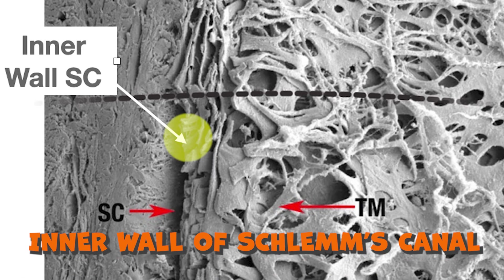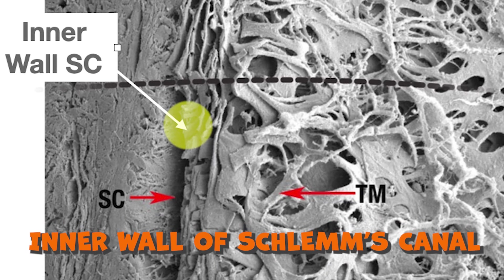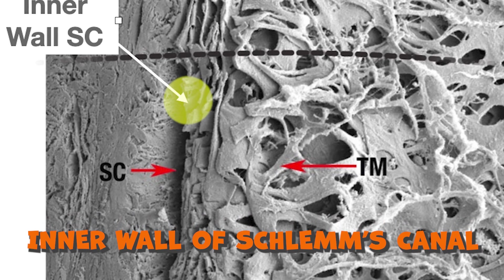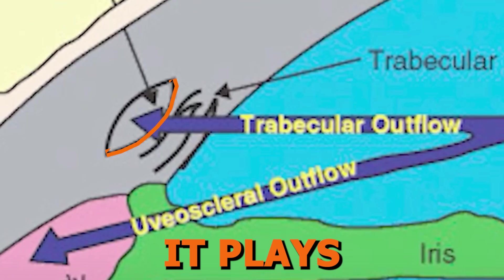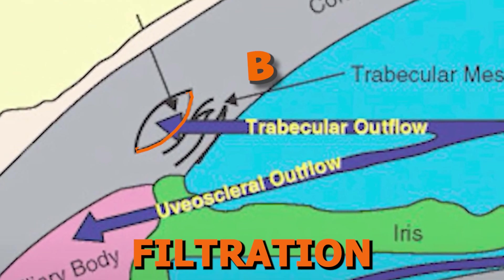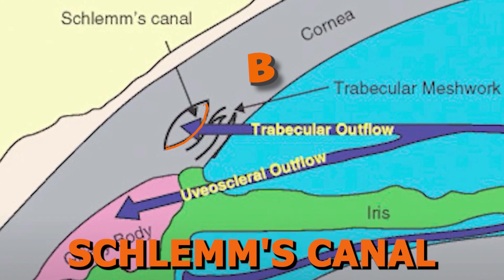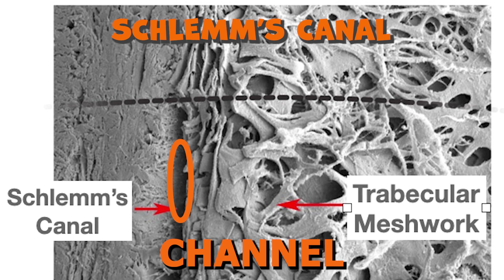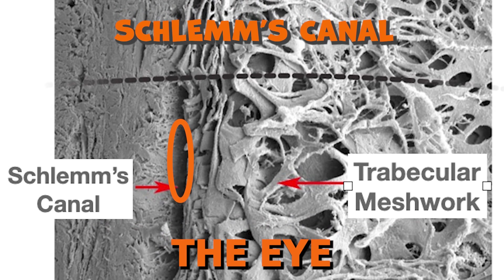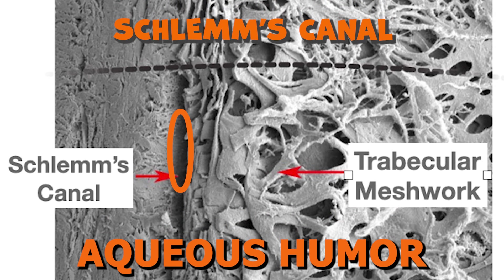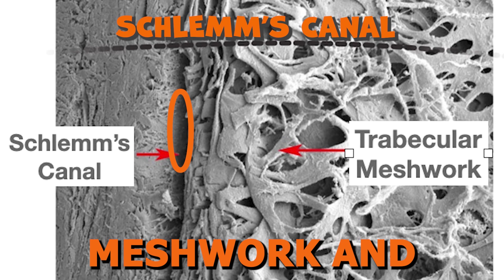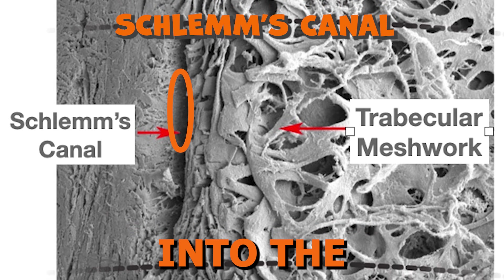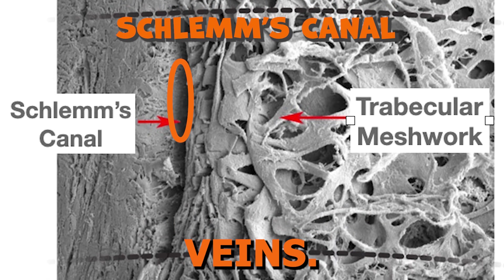Point B is the inner wall of Schlemm's canal, which is lined with endothelial cells and is in direct contact with the trabecular meshwork. It plays a crucial role in the filtration and passage of aqueous humor into Schlemm's canal. Point C is Schlemm's canal itself, a circular channel situated in the angle of the eye that collects aqueous humor from the trabecular meshwork and facilitates its drainage into the episcleral veins.